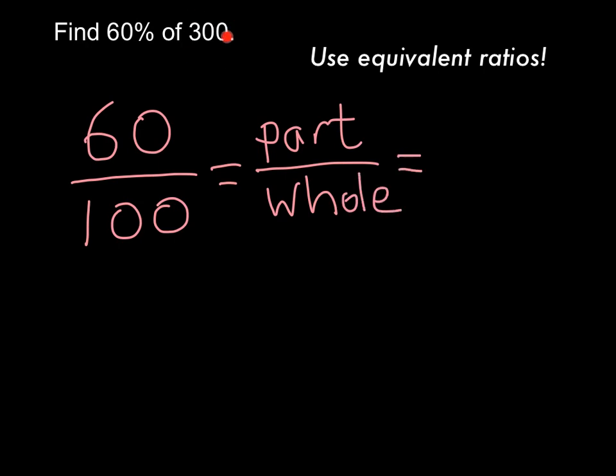Well, for this problem, that 300 is telling me the whole amount I'm dealing with. So the 300 goes on the bottom. And now I have to ask myself, what am I multiplying by to turn that 100 into 300? And that's pretty easy.